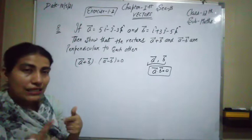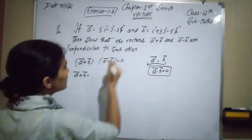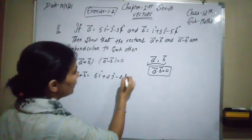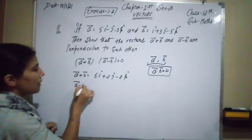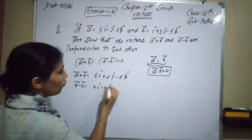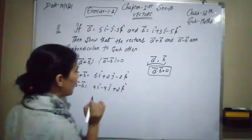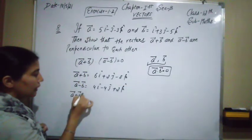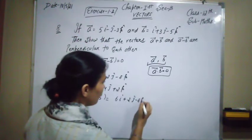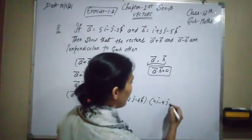We first compute: a⃗ + b⃗ = (5+1)î + (2)ĵ + (5−3)k̂ — wait, working through the given components — giving 6î + 2ĵ − 8k̂. Then a⃗ − b⃗ = (5−1)î + (−4)ĵ + (−3+5)k̂, which is 4î − 4ĵ + 2k̂. Now we find the dot product (6î + 2ĵ − 8k̂) · (4î − 4ĵ + 2k̂).